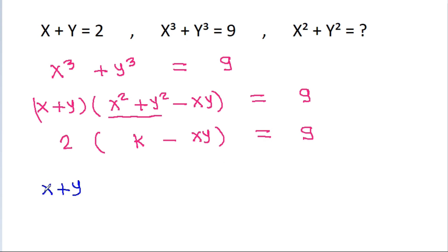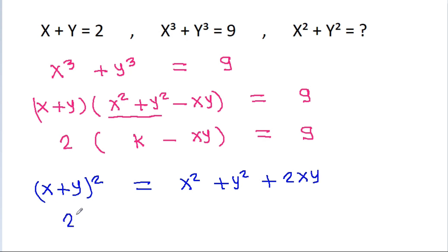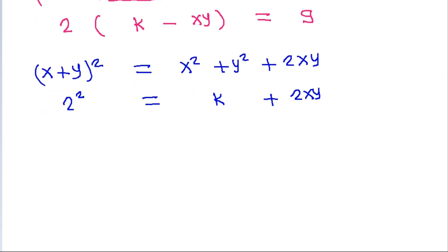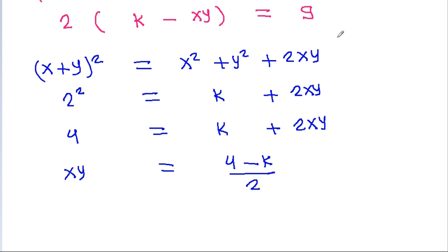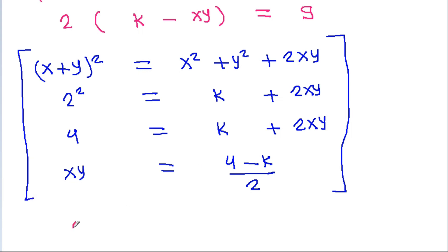And x plus y squared is equal to x square plus y square plus 2xy. So 2 squared is equal to x square plus y square, which is k, plus 2xy. And it is 4 is equal to k plus 2xy. So xy will be equal to 4 minus k by 2.